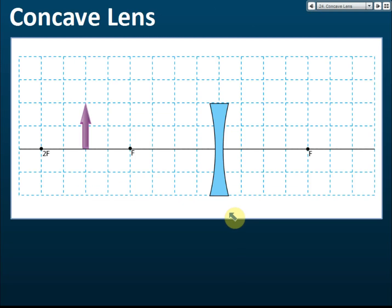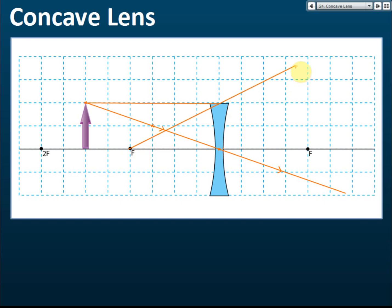Now let's draw the ray diagram step by step. To draw it, you need three points. Choose the first point — we want the ray to pass through the optical center. You can take a third point as well. Join the three points to form the rays. First rule: passes through the optical center, no refraction. Second rule: parallel to the principal axis, refracted away from the principal focus. Note that refracted lines are drawn at the center of the lens.